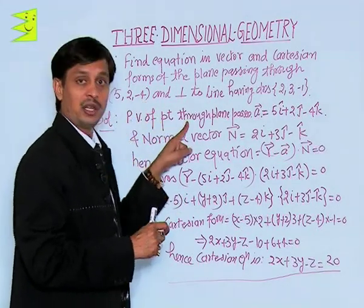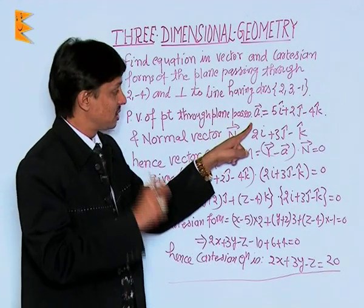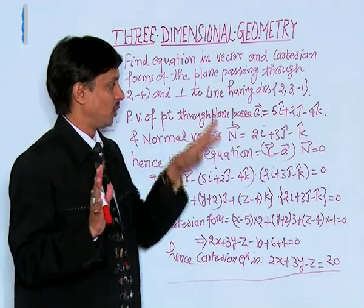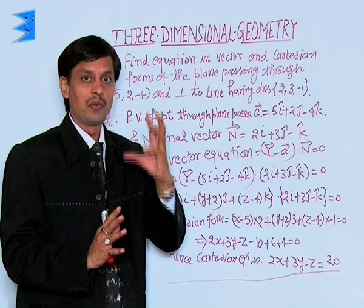Position vector of the point through which the plane is passing is given by, suppose, vector a equals 5i + 2j - 4k. Number 1: we have obtained the position vector of the location through which our plane is passing.